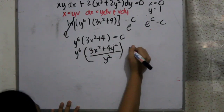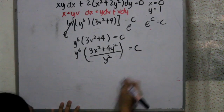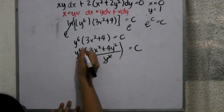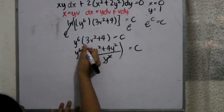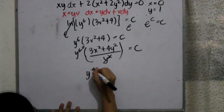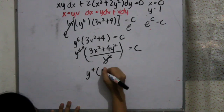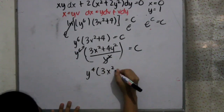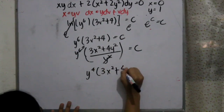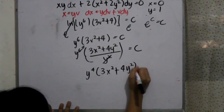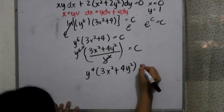After substituting and canceling, we obtain y⁴·(3x² + 4y²) equals c.